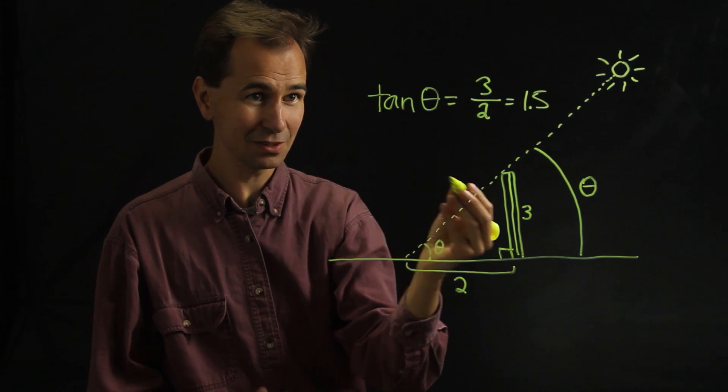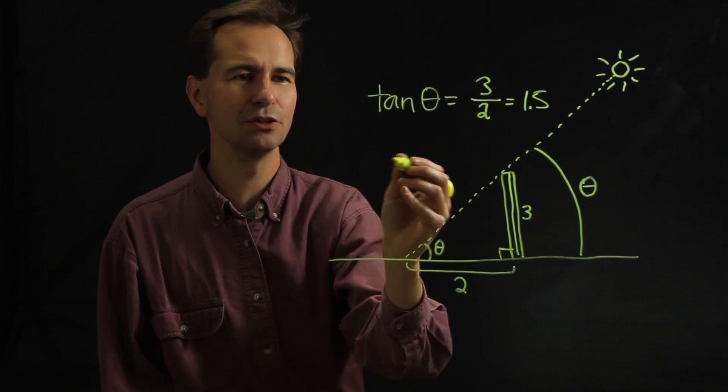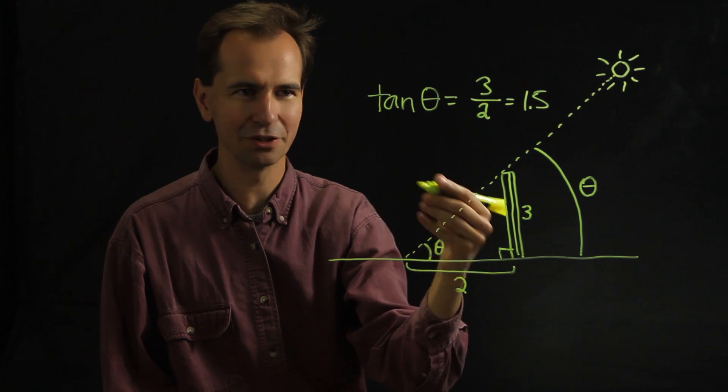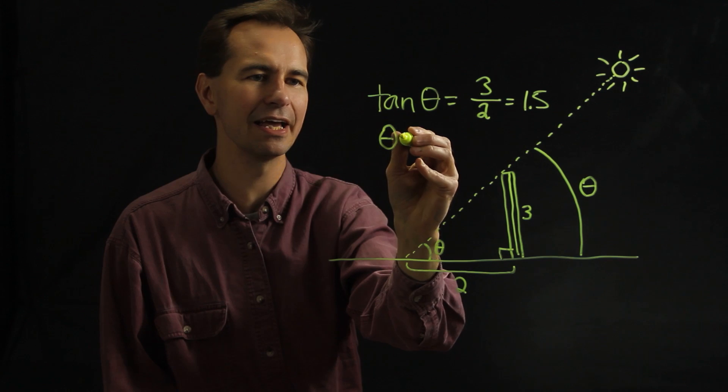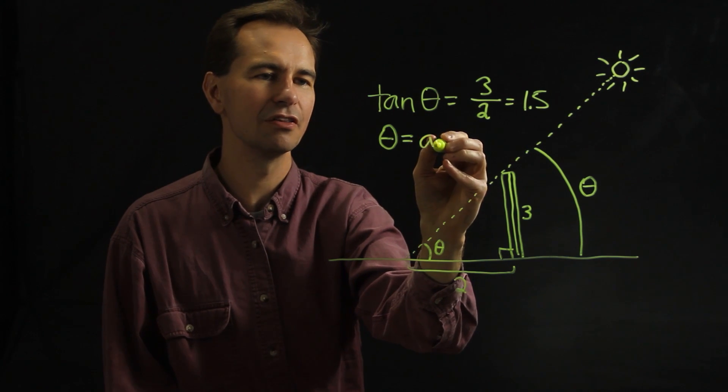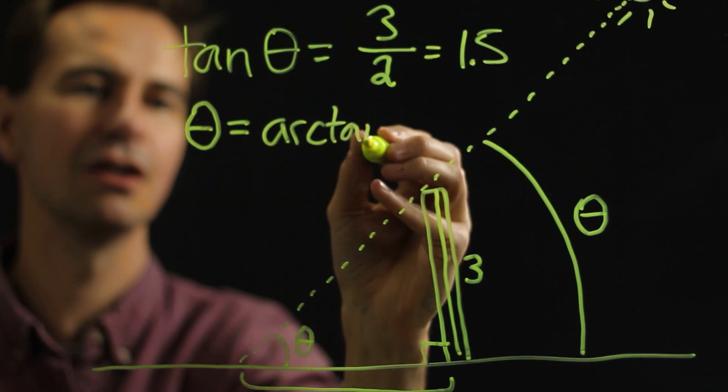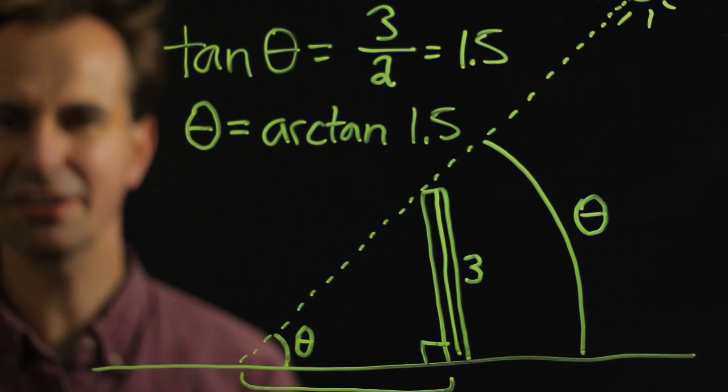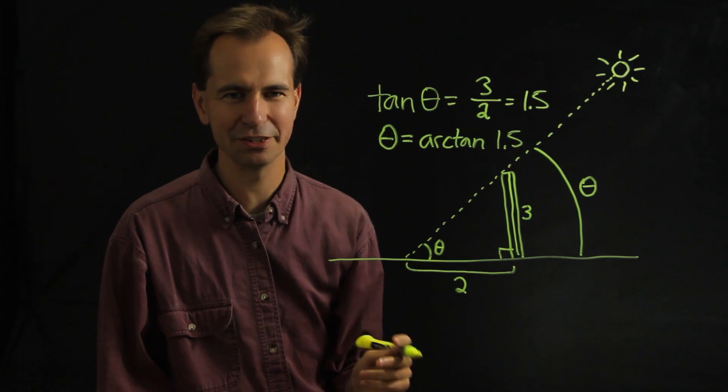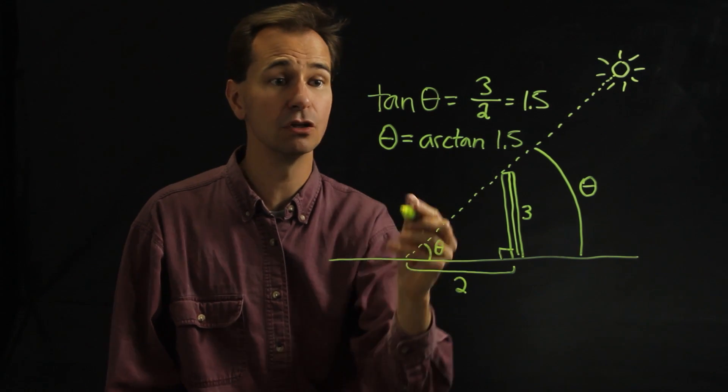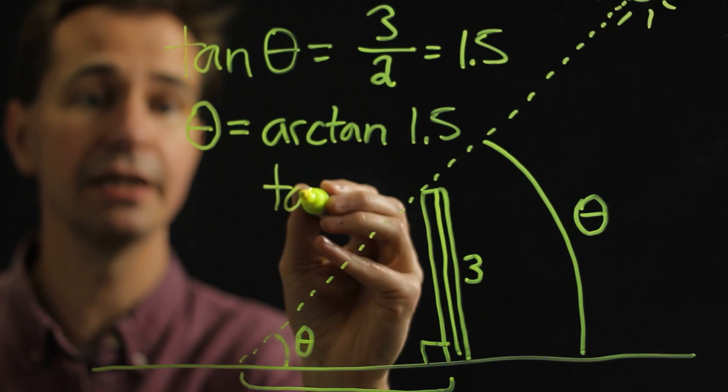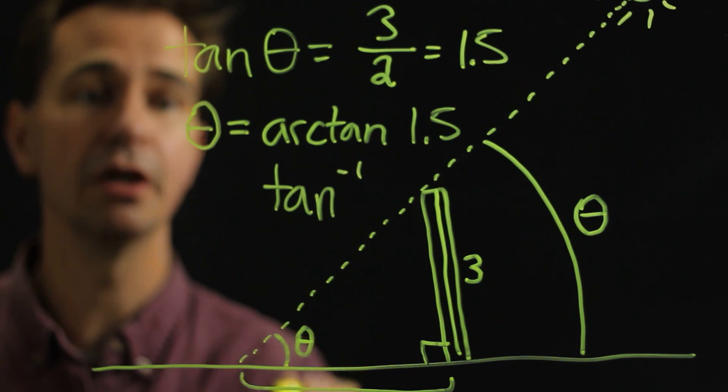So to figure out what that angle is, you use something called an arc tangent or an inverse tangent. So the way we would write that on paper is just that the angle equals the arc tangent of 1.5. And most calculators, especially scientific calculators, have a little ATAN button. That's an arc tangent button. Or sometimes the button will say tan minus 1. It's the same thing.